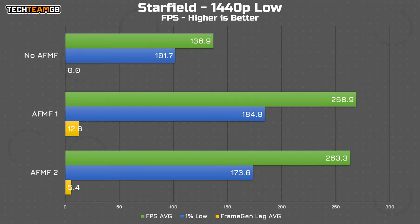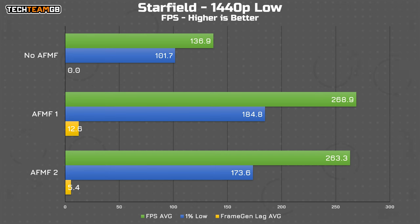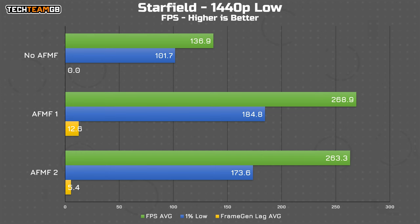Finally we have Starfield, an arguably more intensive game than Cyberpunk — even on a 6900 XT on full low settings, you still net less FPS than you get on Cyberpunk on medium. So it's a perfect candidate for AFMF. Going from 137 FPS average to around 265 FPS is astonishing; the 1% lows with AFMF on are actually higher than the average without either version enabled. Much like Cyberpunk, the frame generation lag dropped from 12.6 milliseconds down to just 5.4 milliseconds, which is fantastic.